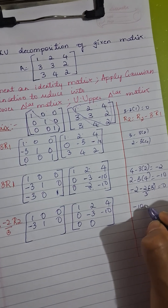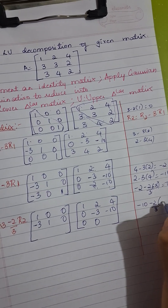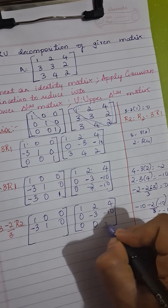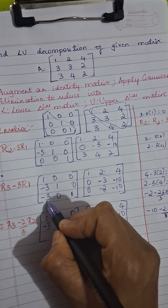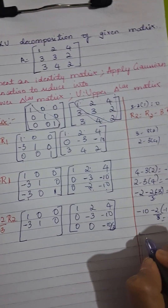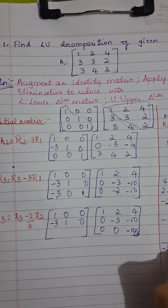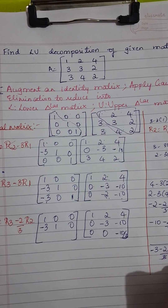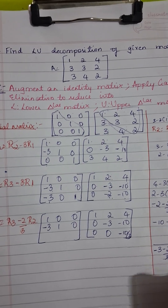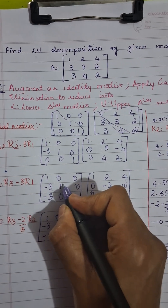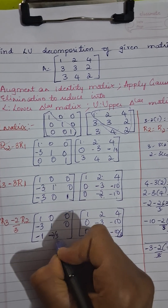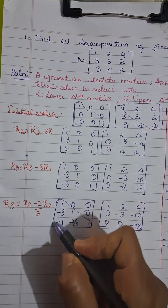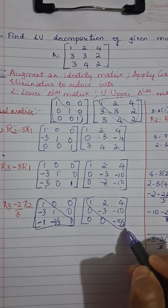Continuing the third row transformation: −10 − (2/3)(−10) = −10 + 20/3 = −30/3 + 20/3 = −10/3. For the identity side third row: −3 − (2/3)(1) gives −3 + 2 = −1; 0 − (2/3)(1) = −2/3; 1 − 0 = 1. We can now see that the left matrix is a lower triangular matrix and the right matrix is an upper triangular matrix.